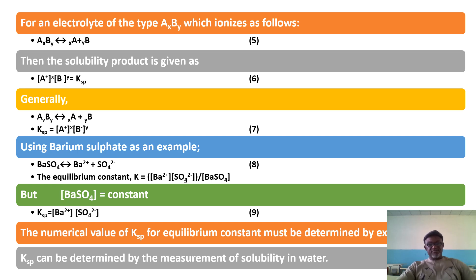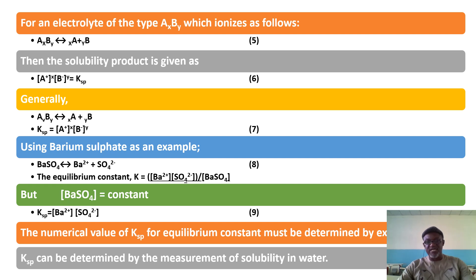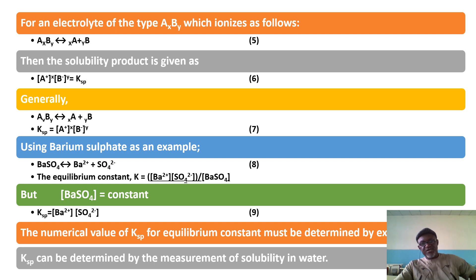The numerical value of Ksp must be determined by experiment, and once determined, most values are tabulated in standard textbooks. You can always find them there. We can also determine Ksp by measurement of solubility in water. Those tabulated values can be used, as we are going to see, in the application of solubility product constant principles.